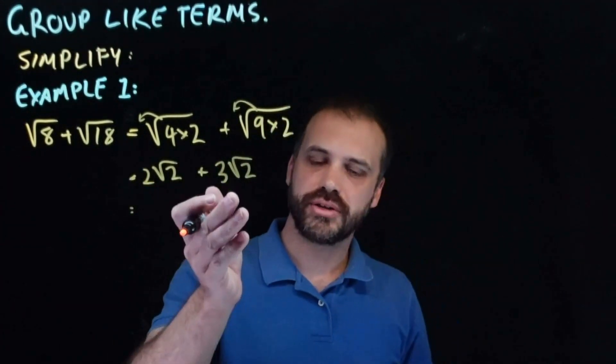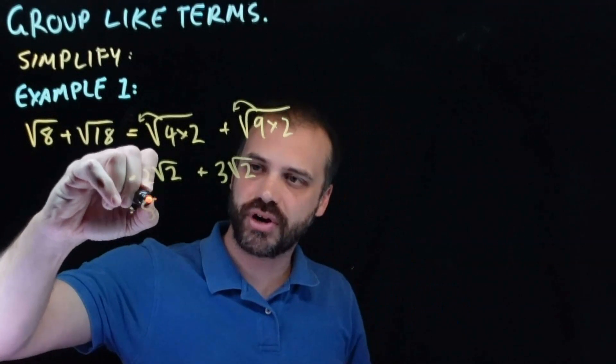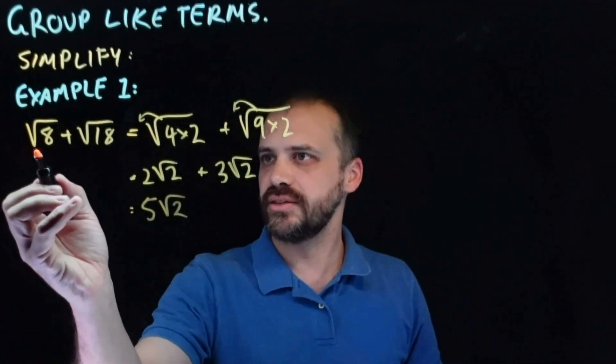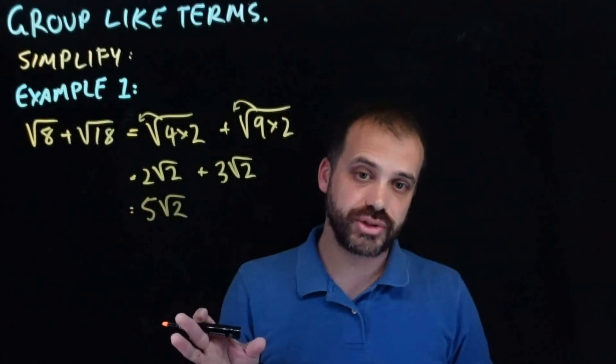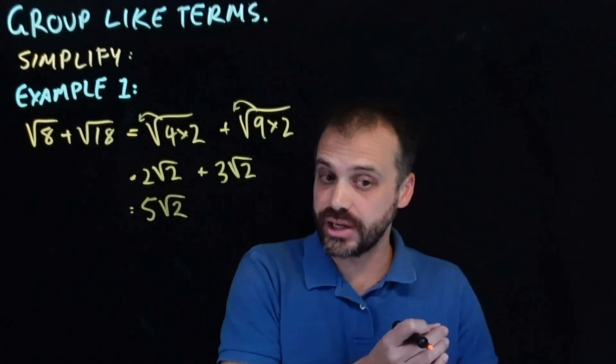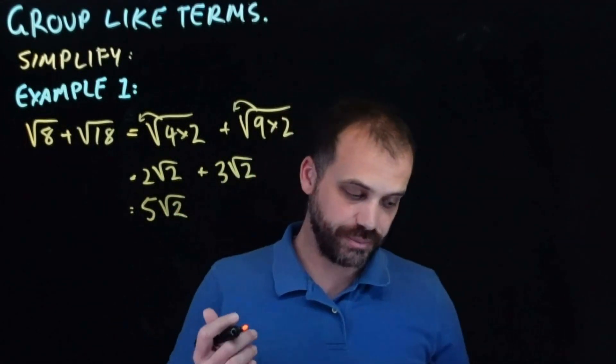2 lots of root 2, 3 lots of root 2. My final answer is 5 root 2. So I've taken this where it didn't look like they were like terms, I've simplified them and found out that they in fact are like terms, and then I've been able to group them.